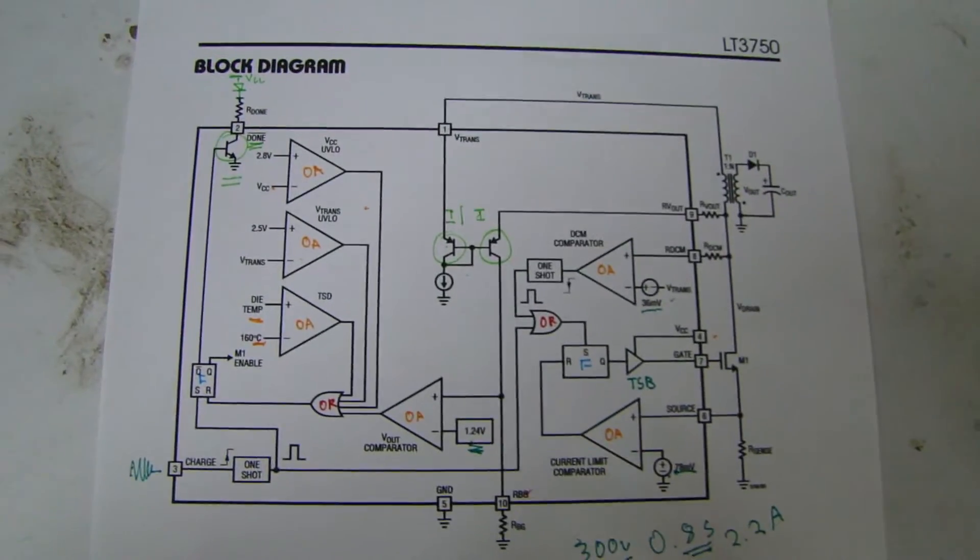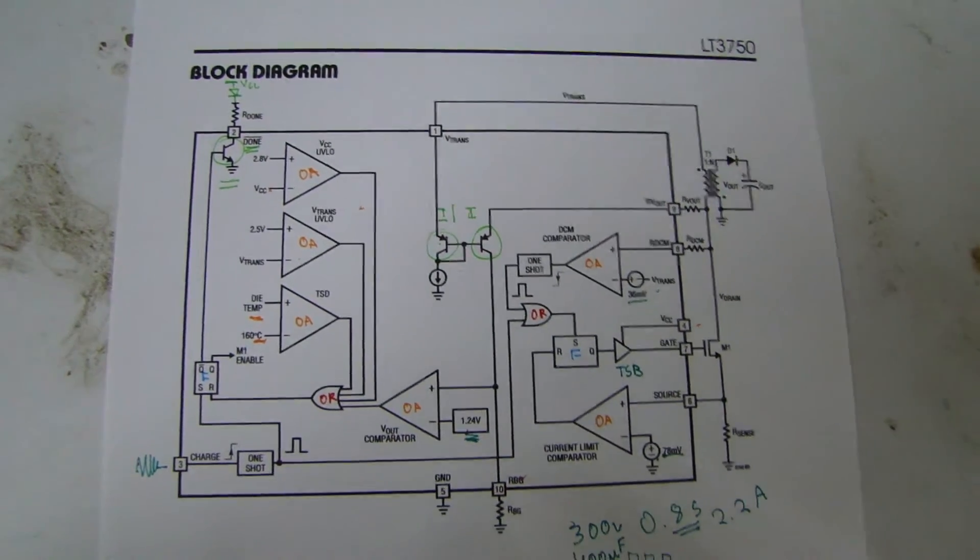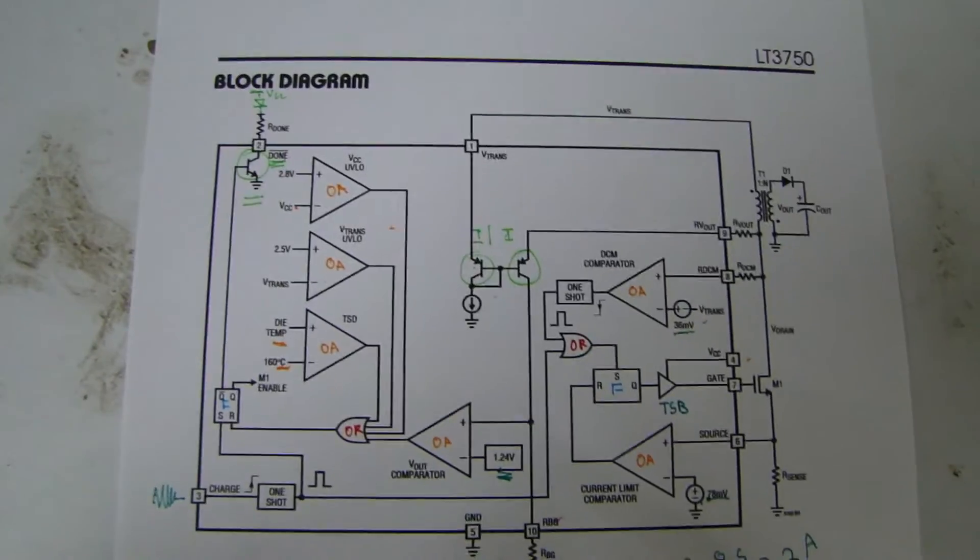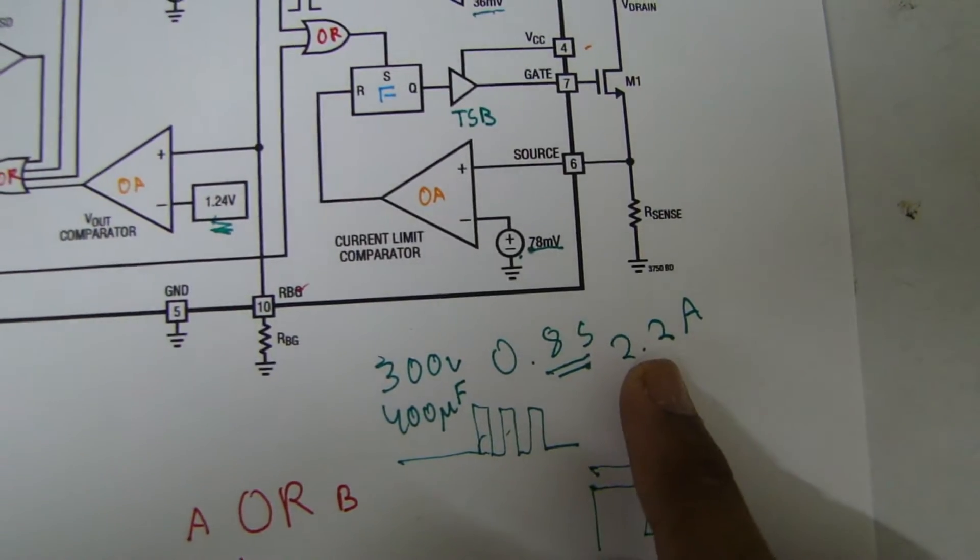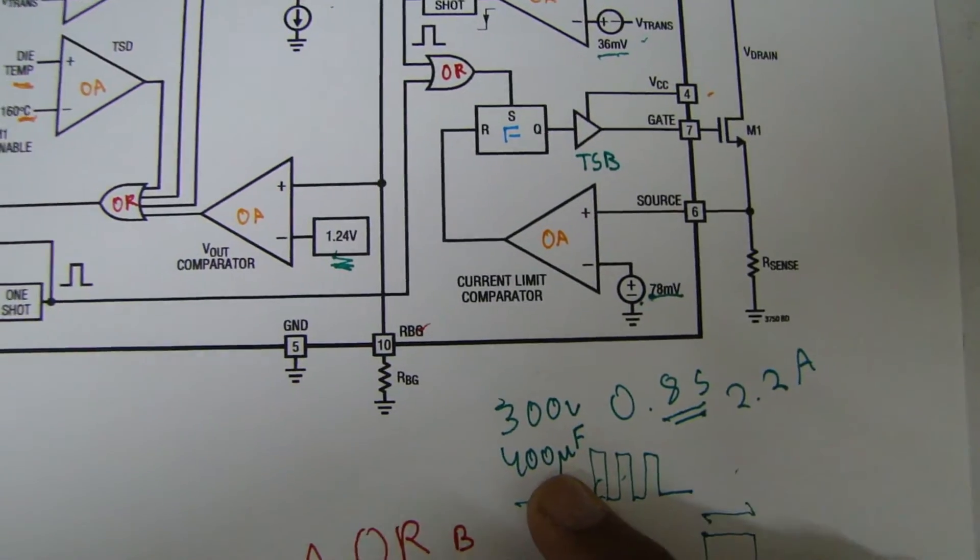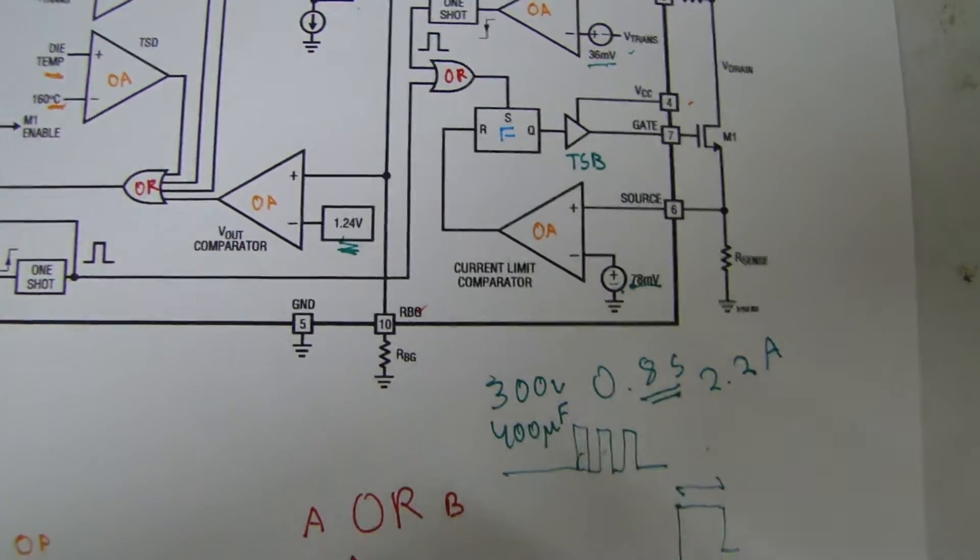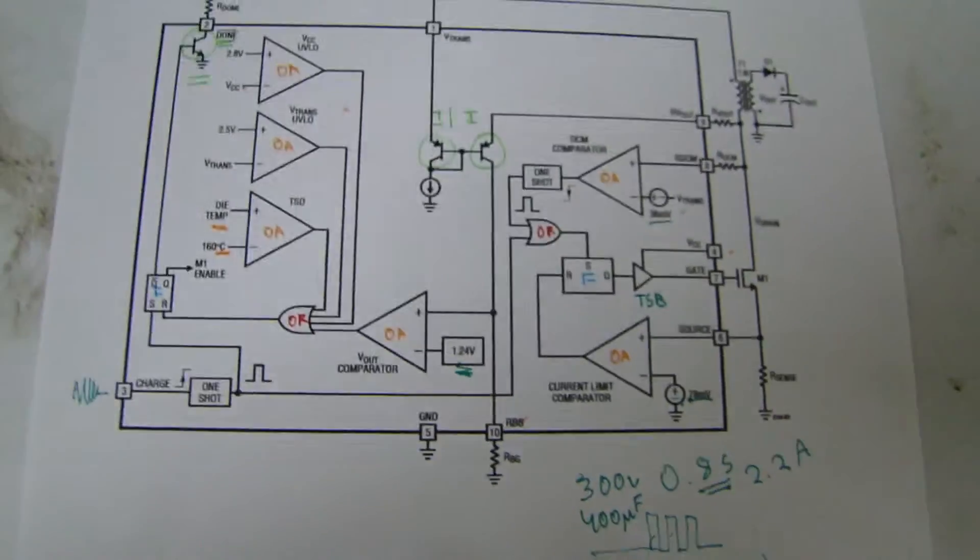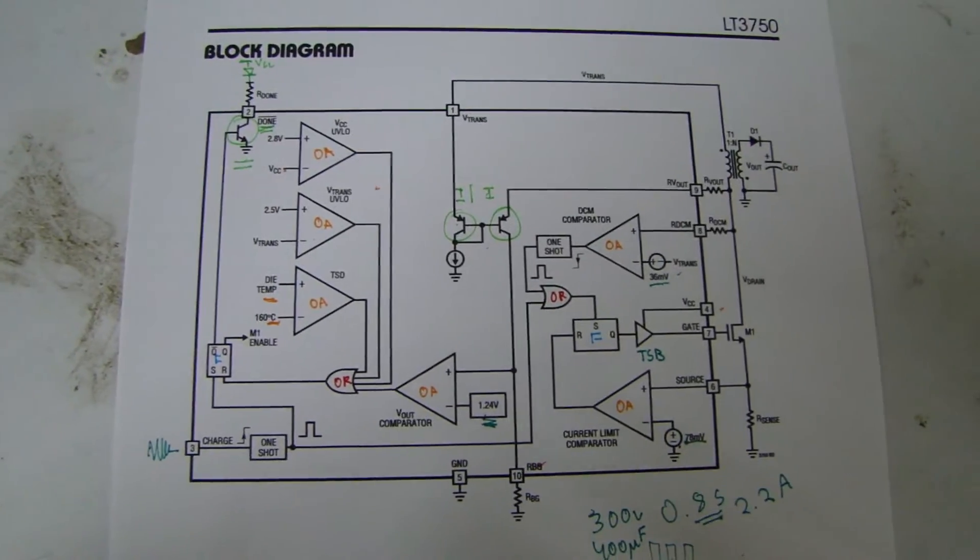So what this IC does is it charges large capacitors very quickly and efficiently. The input current is only 2.2 amps and it can charge a 300 volt 4000 microfarad capacitor in 0.8 seconds. I bet even a ZVS can't do that.